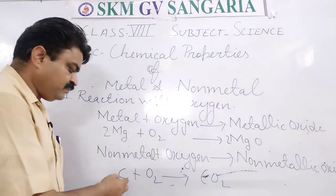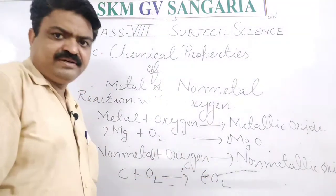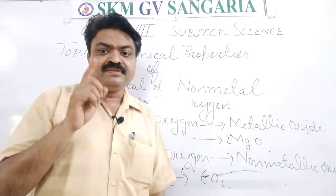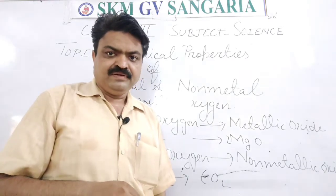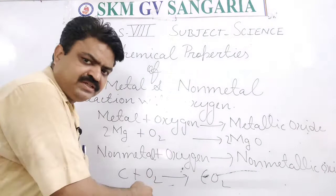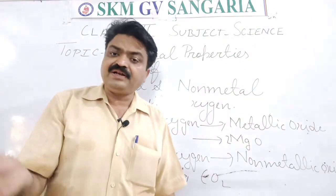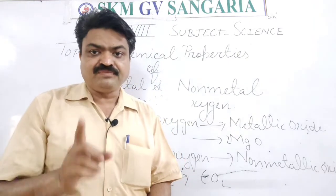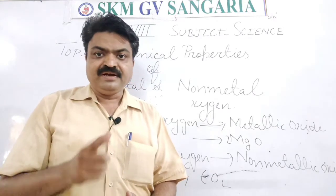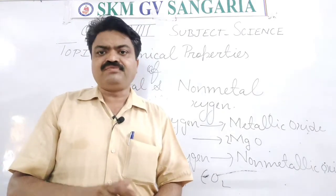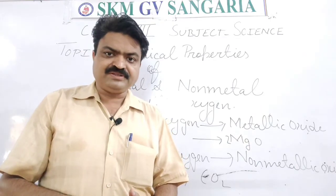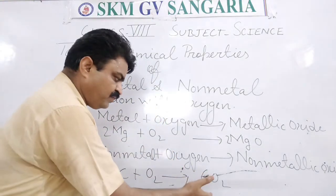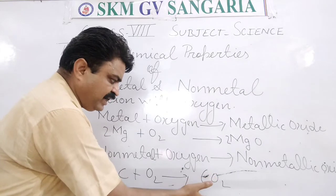Non-metallic oxide carbon dioxide is acidic in nature. When carbon dioxide reacts with water it forms carbonic acid. Similarly, when sulfur reacts with oxygen it forms sulfur dioxide, and when sulfur dioxide reacts with water it forms sulfurous acid or sulfuric acid. This acidic nature can be confirmed with litmus paper, where blue litmus paper changes to red — because non-metals form acidic oxides.